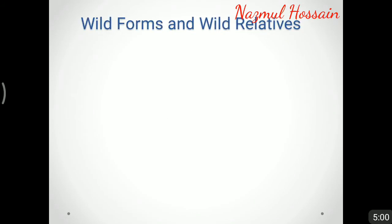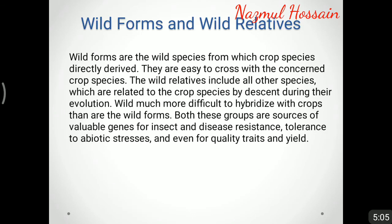Wild forms are the wild species from which crop species are directly derived; they are easy to cross with the concerned crop species. Wild relatives include all other species which are related to the crop species by descent during evolution, and are much more difficult to hybridize with crops. Both these groups are sources of valuable genes for insect and disease resistance, tolerance to abiotic stresses, and even for quality traits.